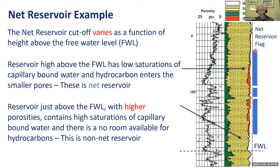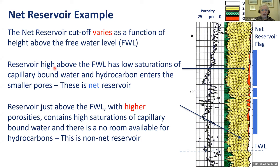A net pay flag shown in blue is used to average the parameters in these intervals. The net reservoir cutoff varies as a function of height. The reservoir high above the free water level has low saturations of capillary-bound water, and hydrocarbon enters the smaller pores - this is net reservoir. Lower down, you may have even higher porosity but no hydrocarbon in the reservoir - this is non-net. Just above the free water level, with higher porosity, you've got high saturations of capillary-bound water and no room for hydrocarbon - also non-net.